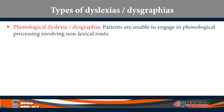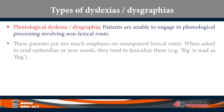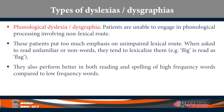The third major type is phonological dyslexia or dysgraphia. Patients are unable to engage in phonological processing involving the non-lexical GPC route. They put too much emphasis on the unimpaired lexical route. Because the phonological route is damaged, they rely completely on the lexical route — so when asked to read unfamiliar words, non-words, or pseudo-words, they regularize them. For example, if told to read 'FLIG,' instead of reading it as 'flig,' they read it as 'flag,' because they rely too much on the whole-word route and 'flag' makes sense while 'FLIG' does not. They also perform better reading and spelling high-frequency words compared to low-frequency words.